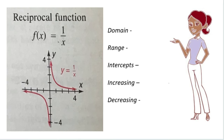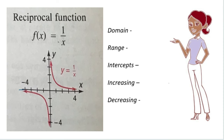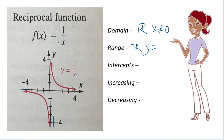This last parent function is called the reciprocal function, or sometimes the rational function. In this function, the variable is in the denominator, and zero cannot be the value of the denominator — it would be undefined. So the domain is all real numbers except x is not equal to zero. Likewise, the range is all real numbers except y is not equal to zero. There are no intercepts because the graph never hits the y or x-axis.